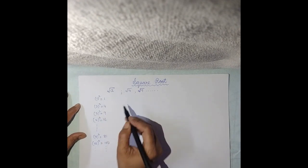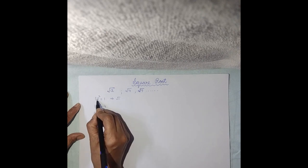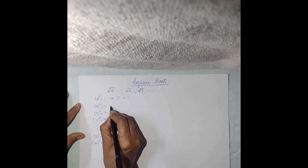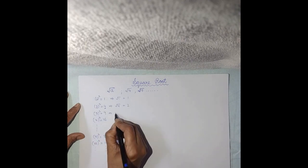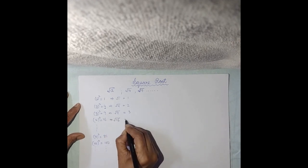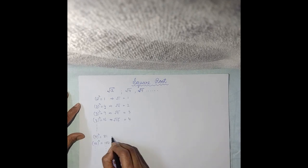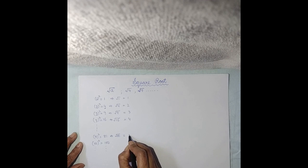With the help of these squares, we will try to find out the Square Root concept. Here the answer is coming as 1, so the Square Root of 1 is this number. From here, the Square Root of 4 will be 2 only. Square Root of 9 will be 3 only. And Square Root of 16 — what should it be? 4 only.